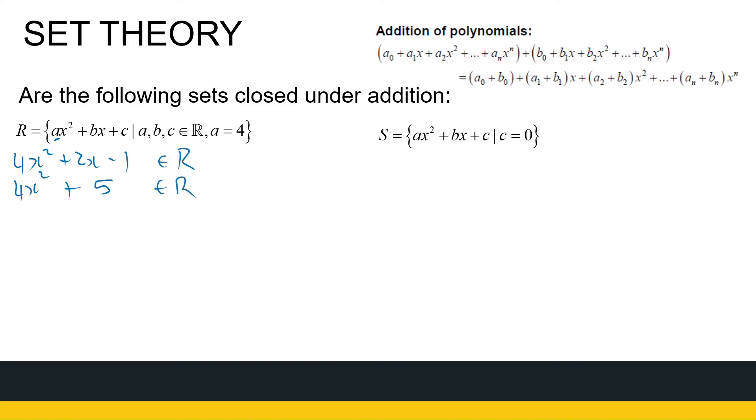What happens if I add them together? That coefficient of x² is going to become 8. So if I've got those two and I add them together, 4x² plus 2x minus 1 plus 4x² plus 5, I get 8x² plus 2x plus 4. And that is not an element of R. So the set R is not closed under addition.